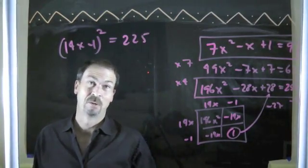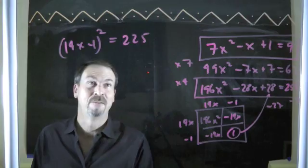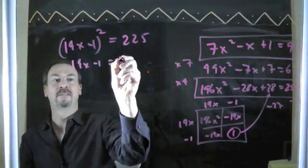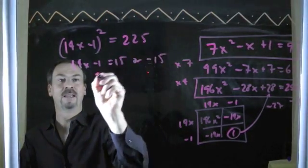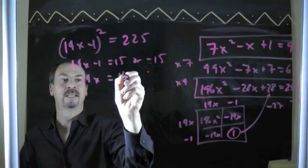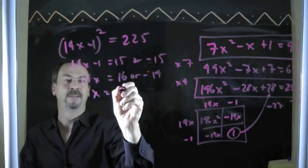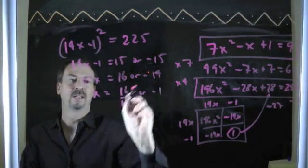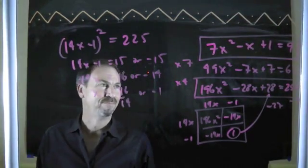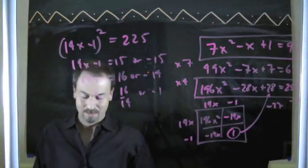Again, I was nice to us, 225 happens to be 15 squared. So 14x minus 1 is 15 or negative 15. 14x is 16 or negative 14. X is either 16 fourteenths or negative 1. Beautiful. It's just beautiful. Let's do one more example.